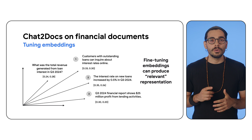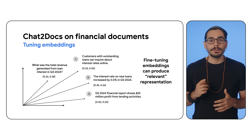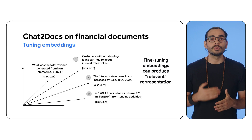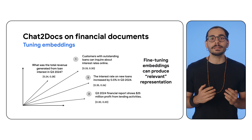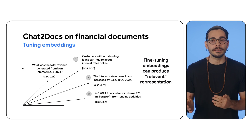Fine-tuning embeddings on question-document pairs can teach the model to generate embeddings that prioritize relevance over general semantic similarity. In our representation, we are moving relevant documents' vectors closer to the question vector and irrelevant ones farther away, addressing the gap between similarity based on word proximity and relevance based on meaning.